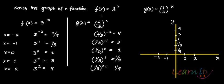Now let's draw the graph. Suppose we have two functions: f(x) = 3^x and g(x) = (1/3)^x. Here I have explicitly taken b greater than 1, and here b is lying between 0 and 1. When x = -2, f(x) = 3^(-2) = 1/9. When x = -1, f(x) = 1/3. When x = 0, f(x) = 1. When x = 2, f(x) = 9.